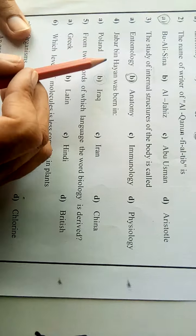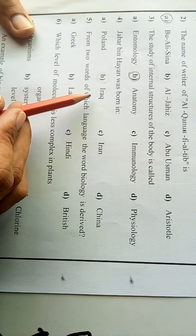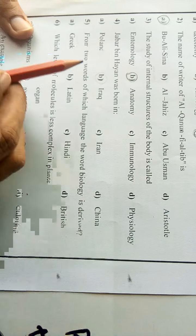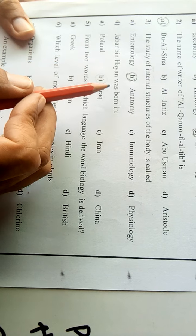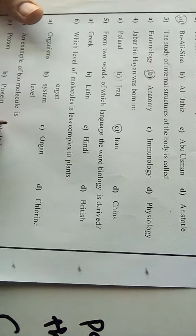Number four: Javir bin Haiyan was born in Poland, Iraq, Iran, or China. Javir bin Haiyan was born in Iran, so we mark the right option C.